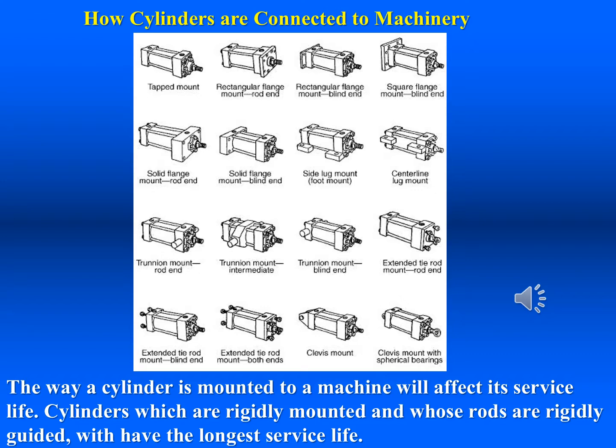The means by which a cylinder is mounted to the machinery determines its usable service life. When the cylinder is firmly bolted into place and its rod has mechanical guidance throughout its movement, the usable service life will be long. Often, though, cylinders are subjected to side loading, which places stressors on the rod gland and bushing. Other factors that decrease service life are exposure to the weather and dirty working environments.